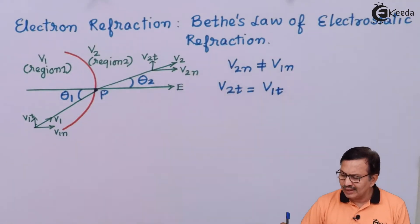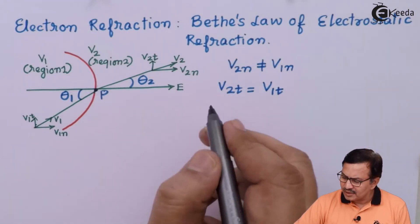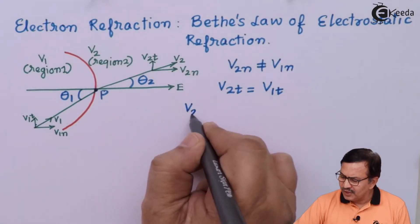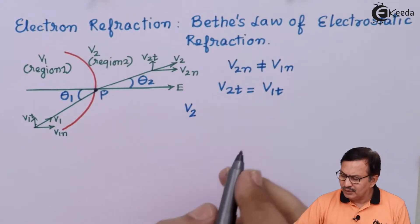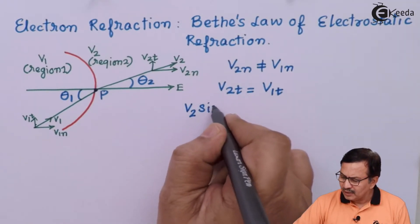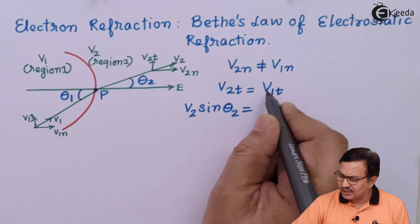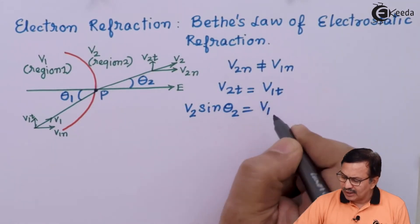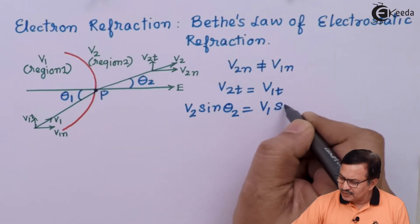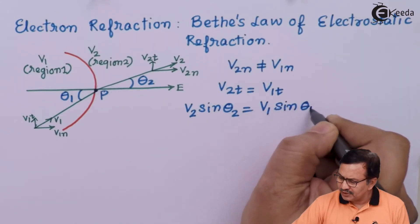But what is V2t? When I resolve the components, the V2t turns out to be V2 into sin of theta2, and this turns out to be V1 into sin of theta1.